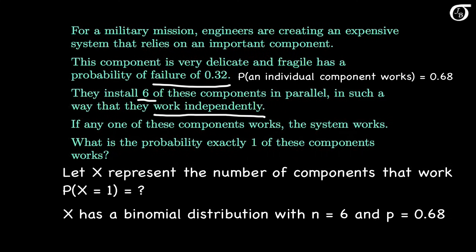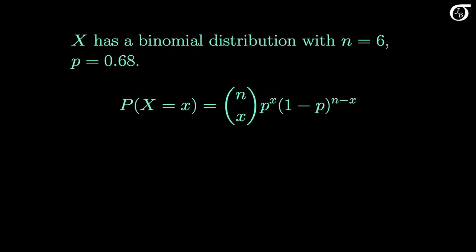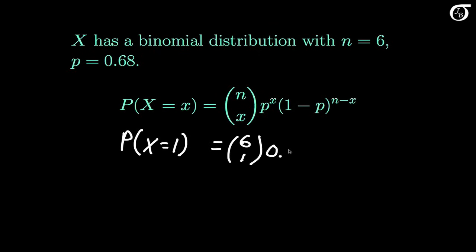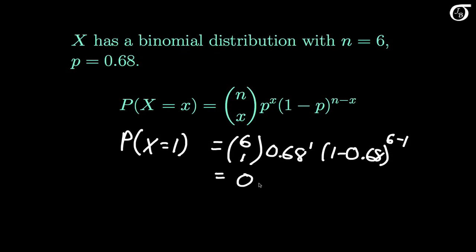Now let's do the calculations. Using the binomial probability mass function, the probability that x equals 1 is 6 choose 1, times 0.68 raised to the first power, times 1 minus 0.68 raised to the power of 6 minus 1. When rounded to 4 decimal places, this works out to 0.0137. So that's the probability that exactly one component works.